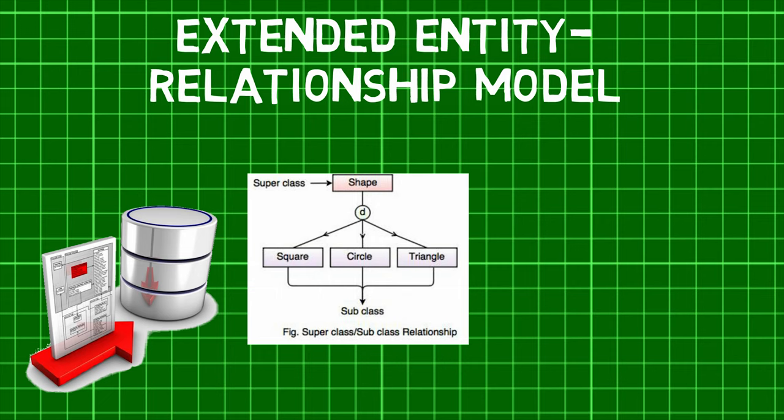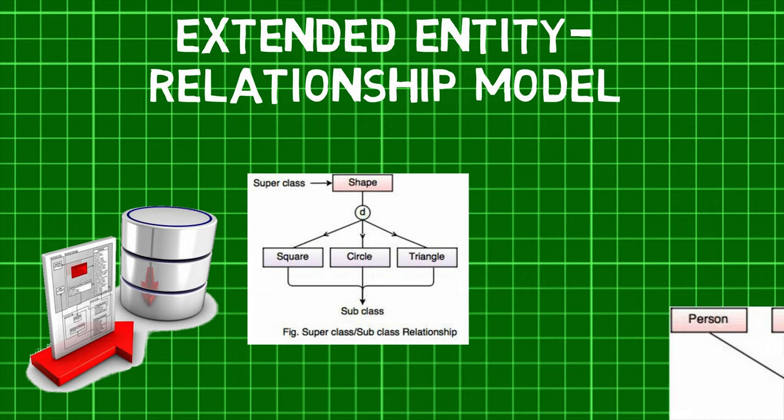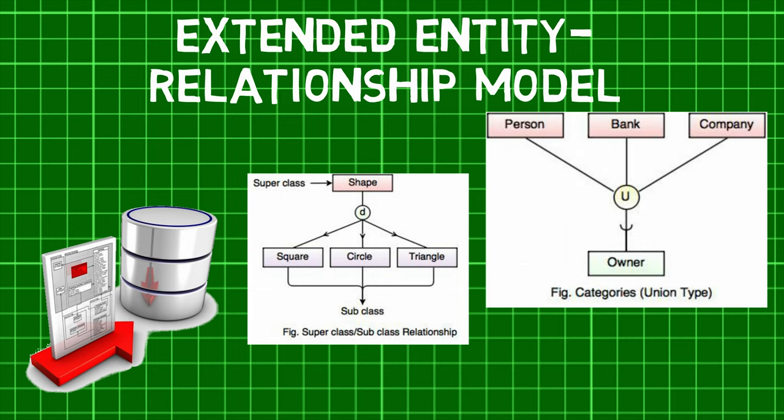First, they include Subclasses and Superclasses, which are the entities that belong to Generalization and Specialization respectively. Put simply, Superclass is an entity type that relates to one or more subclasses, where Subclass is a subgroup of entities with unique attributes.